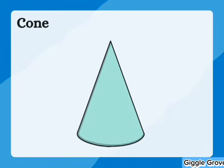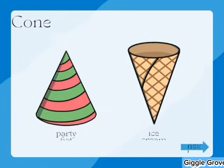A cone is a three-dimensional shape with a circular base that tapers smoothly to a single point called the apex or tip. It has a curved surface connecting the base to the apex.